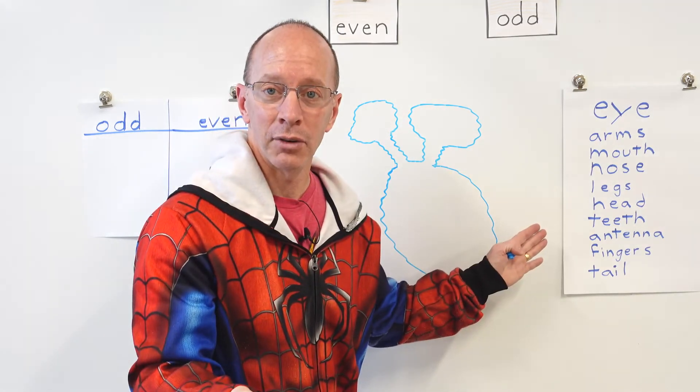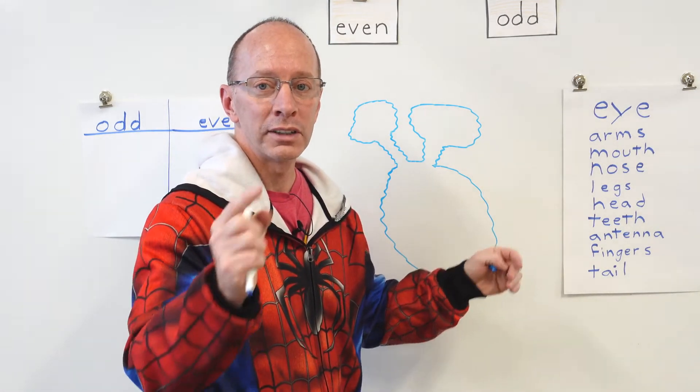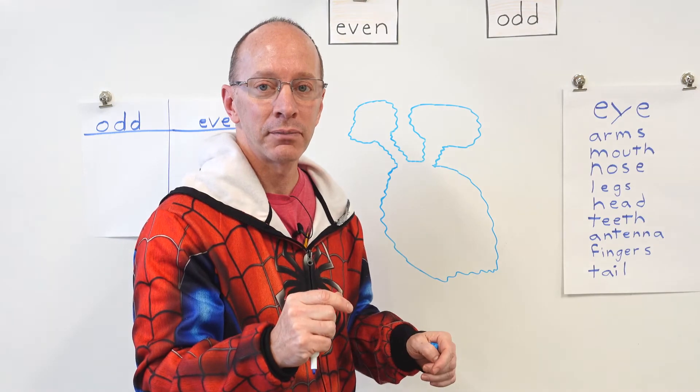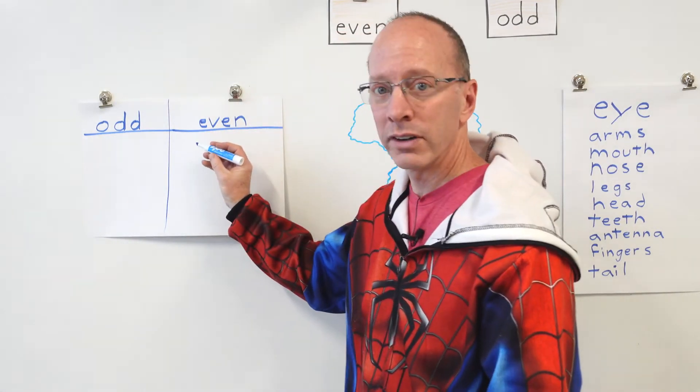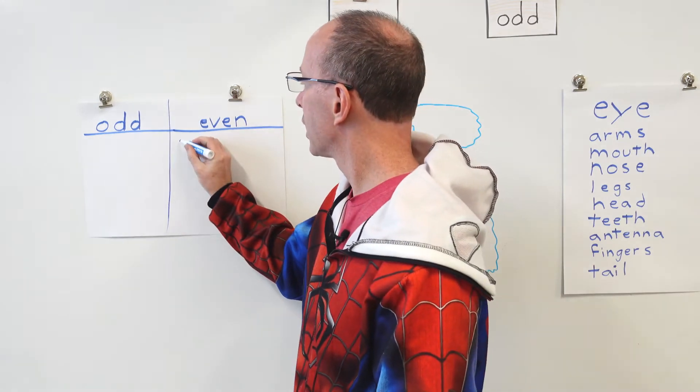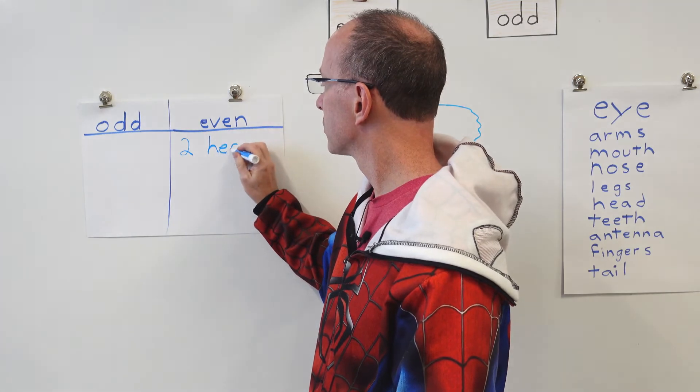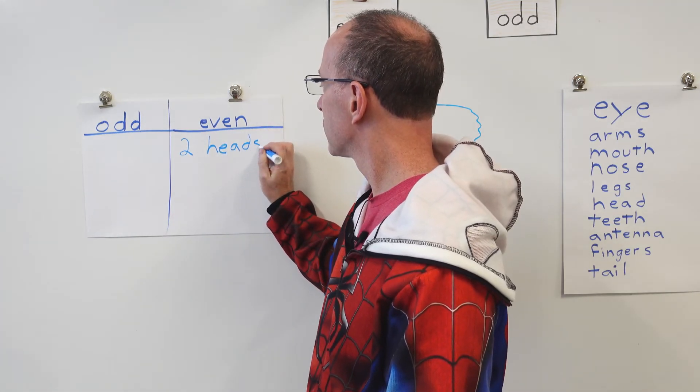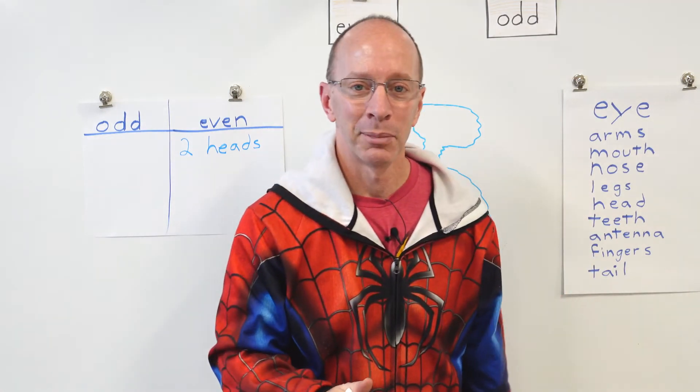Now, I put two heads, right? I have one head and two heads. What is two? What is the number two? Is that odd or even? That's right. That is even. So what I do is I go right over here and I put on this paper two heads. All right. So we're kind of keeping track of the body parts that we're putting on our monster.